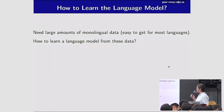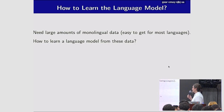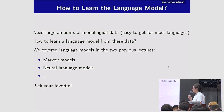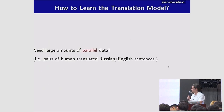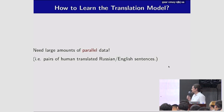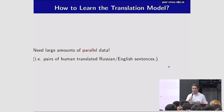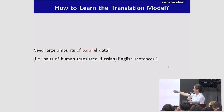For the language model we need large amounts of monolingual data, which are easy to get for many languages. Given that data, we can learn a language model — a Markov model, a neural language model, just pick your favorite. For the translation model it's trickier: we need large amounts of parallel data — pairs of human-translated sentences, for example Russian and English.